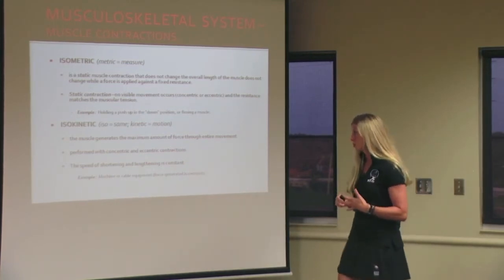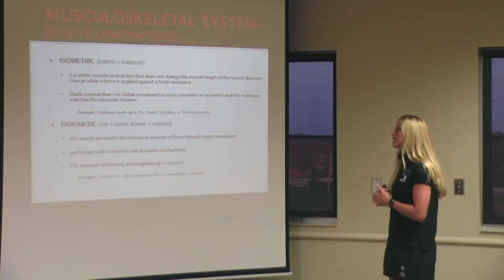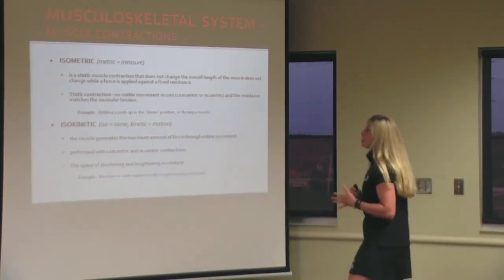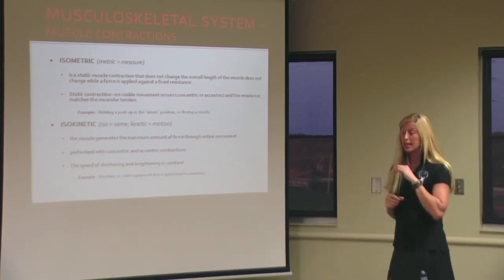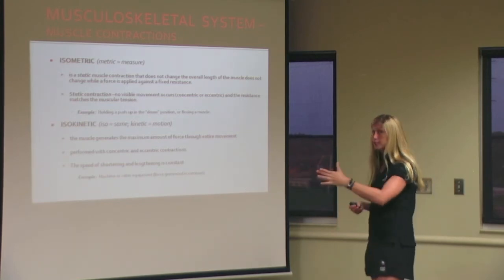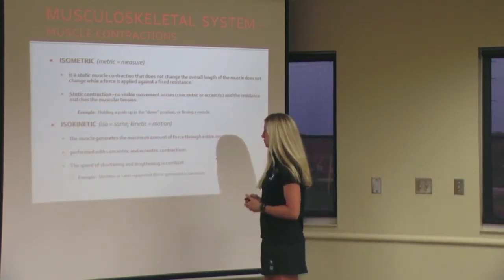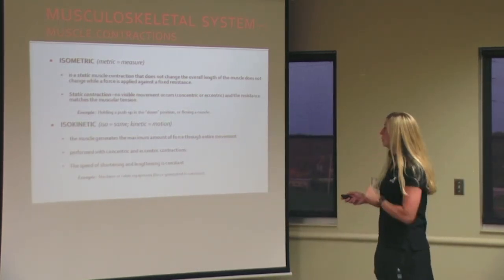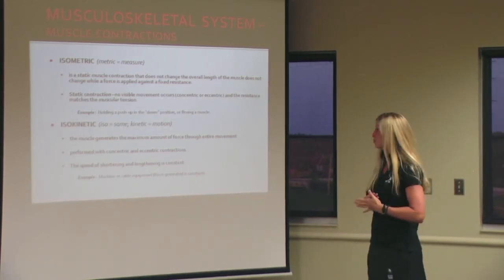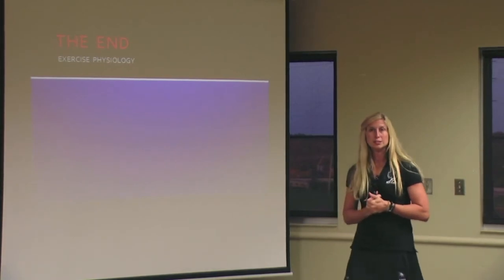Isokinetic means same motion. In an isokinetic contraction, the muscle generates the maximum amount of force throughout the entire movement. Gravity does not come into play — you are moving the same amount regardless of your position, pushing against and resisting a force the same amount the entire time. Unlike isometric, isokinetic contractions do have concentric and eccentric phases because the muscle is shortening and lengthening.